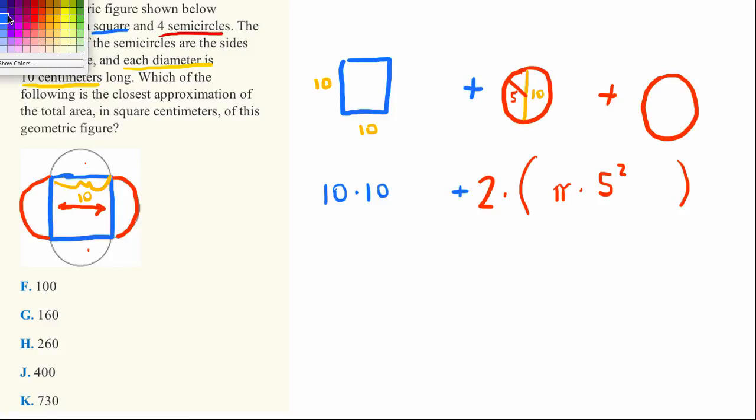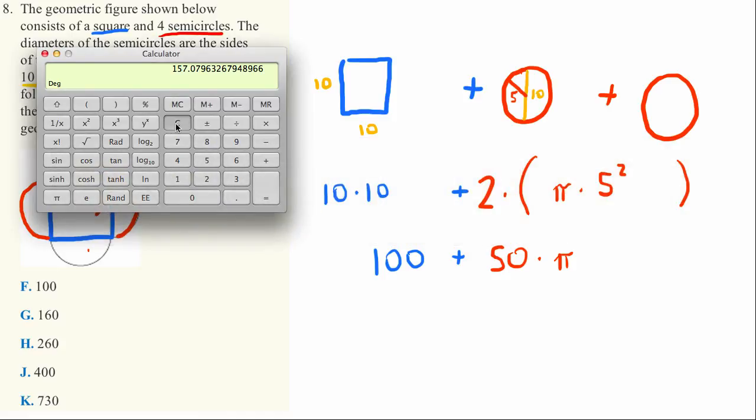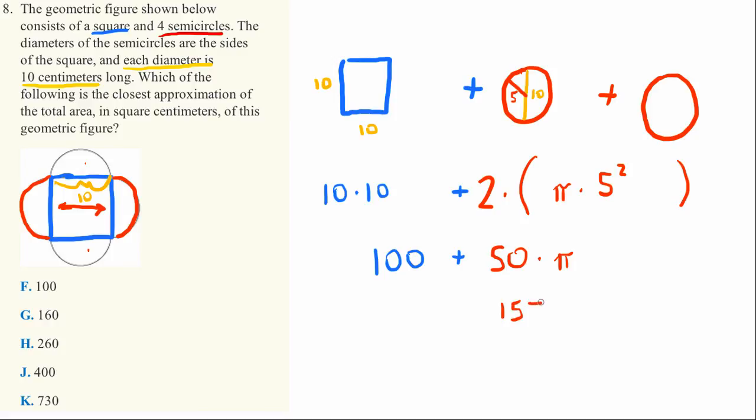All right, so let's go ahead and simplify this equation. 10 times 10 simplifies to just 100. And then we add it to 2 times pi r squared. So that's going to be 2 or 5 squared is 25 times 2 is 50 times pi. We might as well pull out a calculator here to figure out what 50 times pi is. We could estimate, but why bother? So pi times 50 is equal to 157. So this number is now 157. And we just added that to 100. And that's a pretty simple addition. We can do it in our head. The total here is 257. If we just round that a little bit, the answer is H260 is the total area.